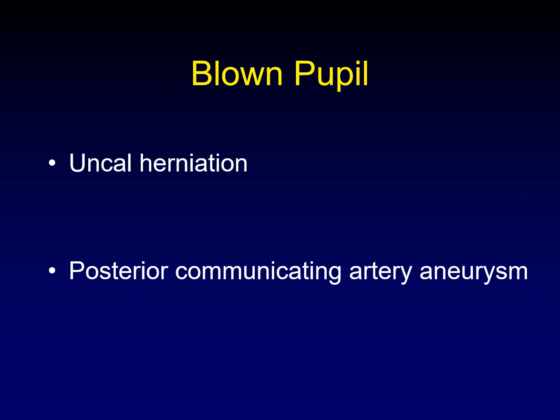So why do we get a blown pupil? We get a blown pupil when there is uncal herniation, or sometimes when there's something else interfering with the third cranial nerve in its cisternal segment, for example, an aneurysm of the posterior communicating artery.